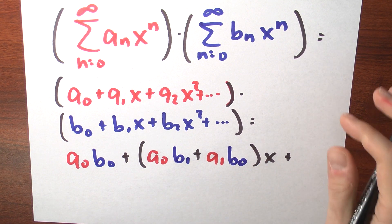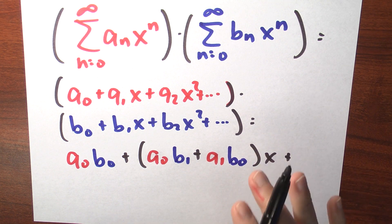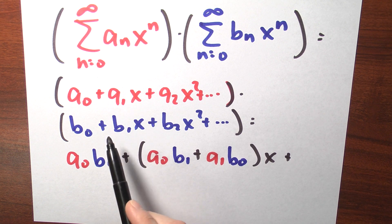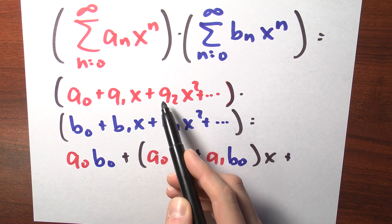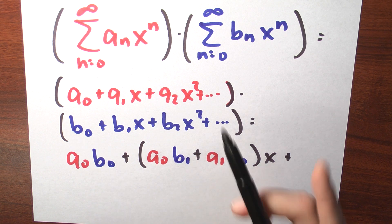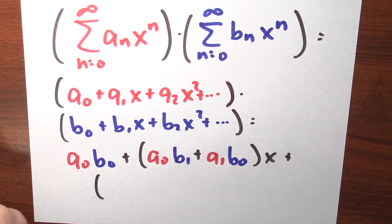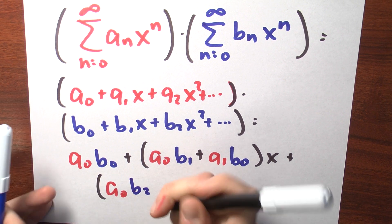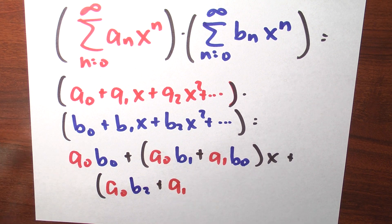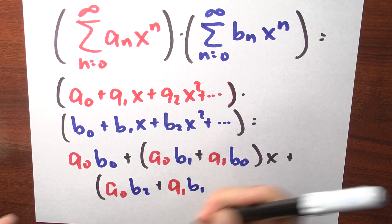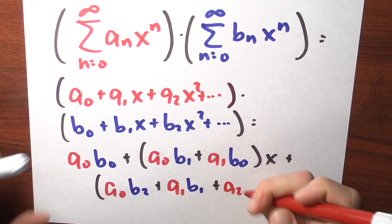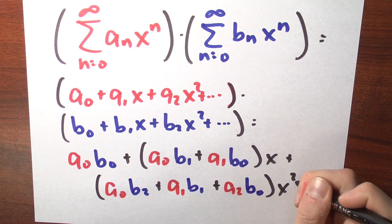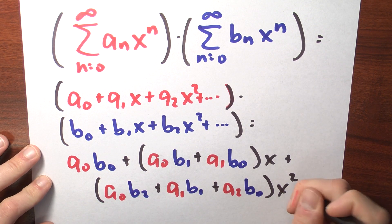What about the x squared term? There are actually three different ways to get an x squared term: a sub 0 times b sub 2 x squared, a sub 1 x times b sub 1 x, and a sub 2 x squared times b sub 0. So the coefficient is a sub 0 times b sub 2, plus a sub 1 times b sub 1, plus a sub 2 times b sub 0. Those are all the ways to get x squared, and then it keeps going.